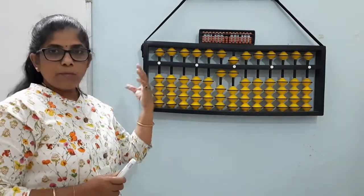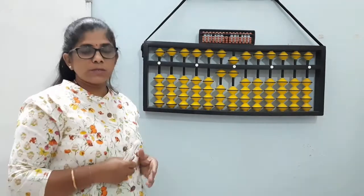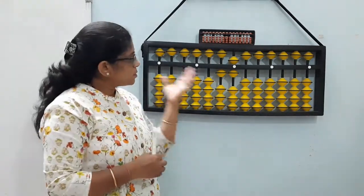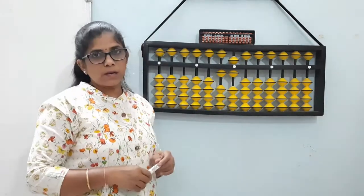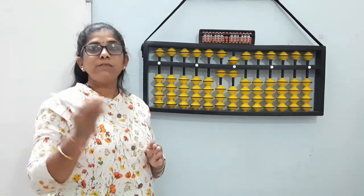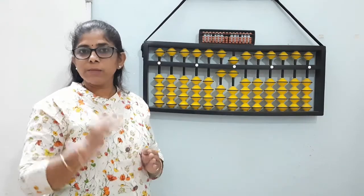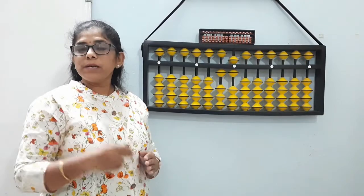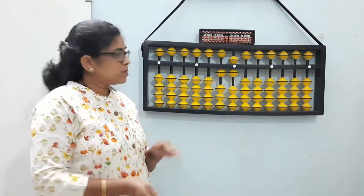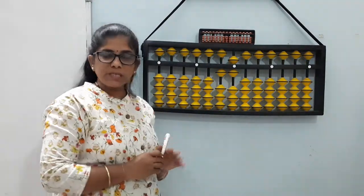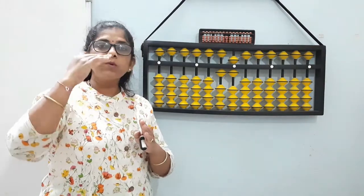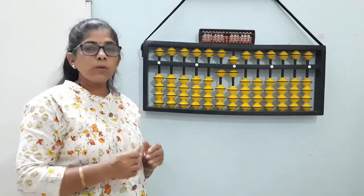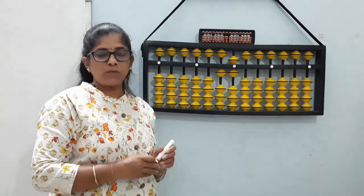So once the student becomes perfect in this, to form the numbers on the abacus, we move to the further concepts like addition, subtraction, multiplication, division, decimal addition, decimal multiplication, then decimal division, percentage, profit and loss, simple interest, square roots. So once the students know all these basics, one concept goes on adding in each level. So this is how we start with the basics of abacus.